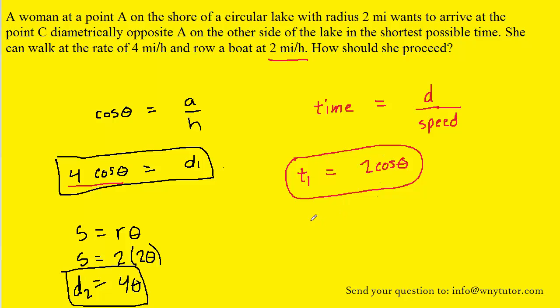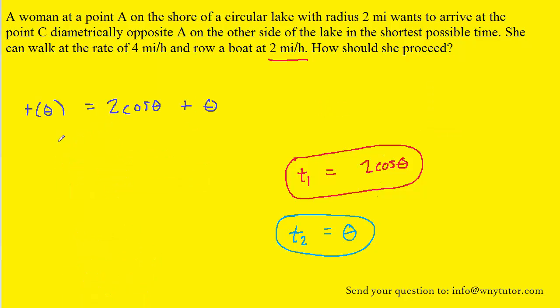We're going to do the same thing for the time required to go along the arc length by foot. We'll call that time T2. Recall that the distance of walking from point B to point C along the shore was 4 theta. And then the speed that the woman walks with was given to us as 4 miles per hour. This simplifies to just theta. So here is a representation of the time to walk along the arc length. The total time would just be these two times added together. Here is the total time function. We have time as a function of the angle equal to T1 plus T2. Now that we finally have a simplified equation in terms of just one variable, we can proceed in optimizing it.